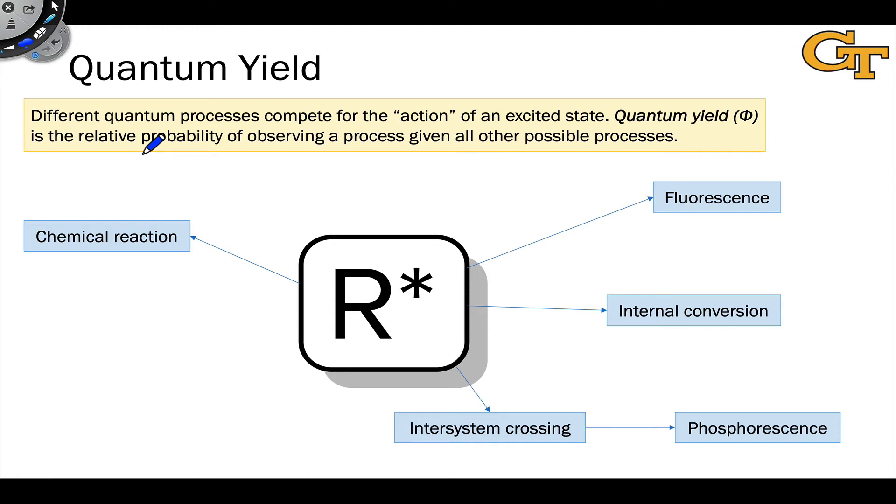To help us think about probabilities in photochemistry, we often use this idea of quantum yield. Quantum yield is defined as the relative probability of observing a process starting from an excited state given all other possible processes. There are other definitions of quantum yield that we'll explore here shortly, but this is one that will give us a good intuition for what's going on.